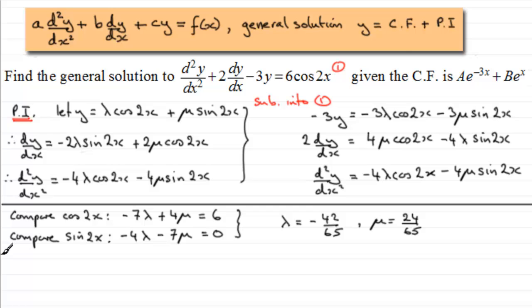So what that means now is that the particular integral, PI for short, then is going to be, well, we've got it as being lambda cos2x. So it's going to be minus 42 over 65 cos2x.